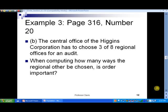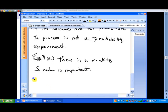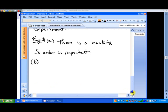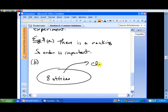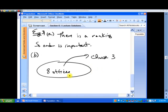Now, in slide number 12, let's take a look at part B here. It says the central office at Higgins Corporation has to choose three of eight regional offices for an audit. When computing, how many ways the regional offices can be chosen is order important. So, let's see here. Here we have eight of these regional offices. Eight offices. and we want to choose three to visit.